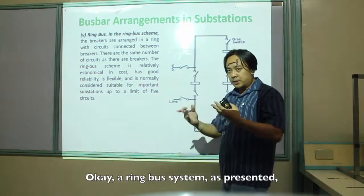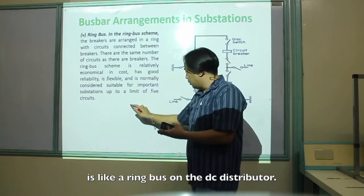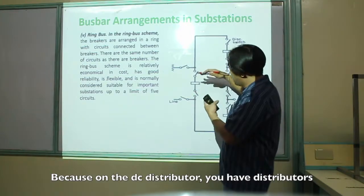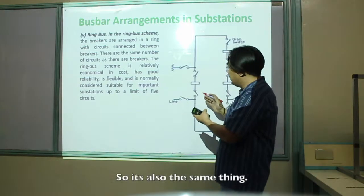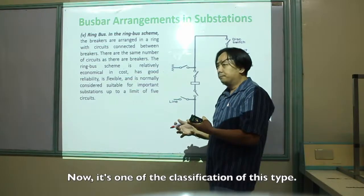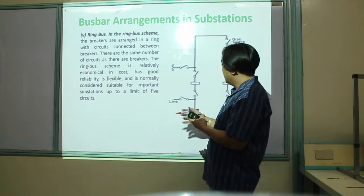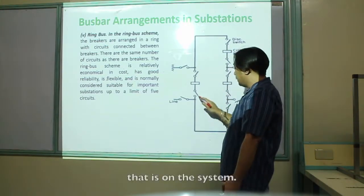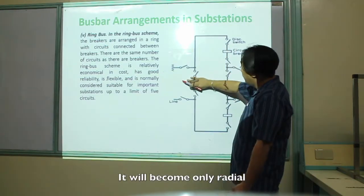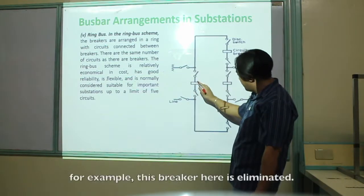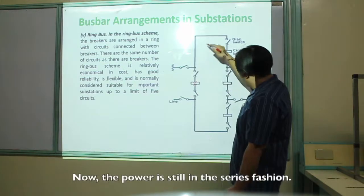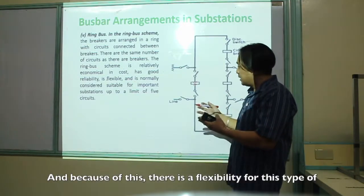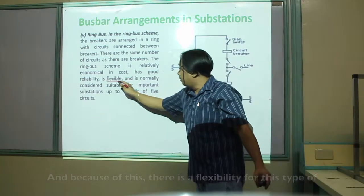A ring bus system is like a ring bus on the DC distributor — distributors connected in a ring. One characteristic of this type is that if one of the breakers is taken offline, power still exists. It will only become radial. Because if one breaker is maintained and removed, the power still flows in a series fashion — power is still continuous. This creates flexibility in this type of arrangement.